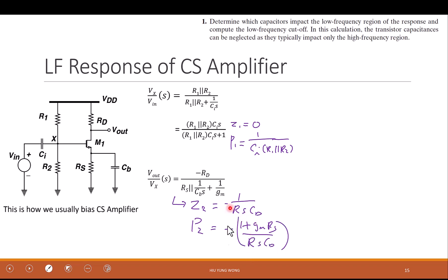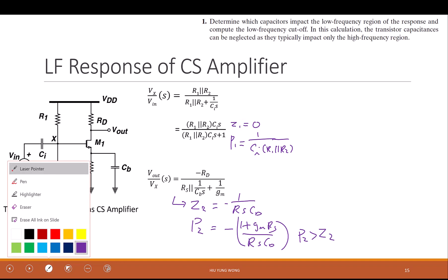Which one is larger, Z2 or P2, based on this expression? P2, because I have 1 plus Gm RS. You have the same denominator, so you can see that P2 is larger than Z2. Now here, I'm going to make CI really large because this is just the coupling capacitor. I really want it to be very small. But no matter how small it is, it is larger than Z1 because Z1 is zero. So how are you going to draw the Bode plot?